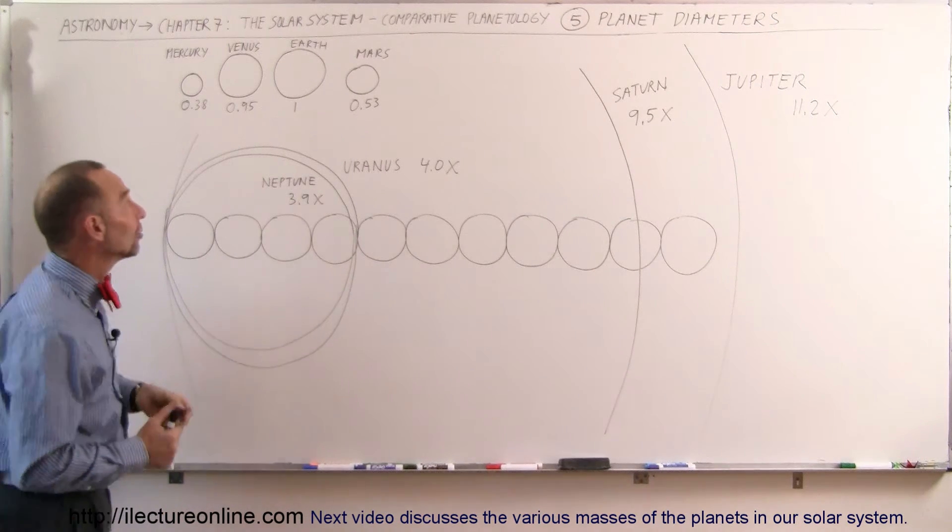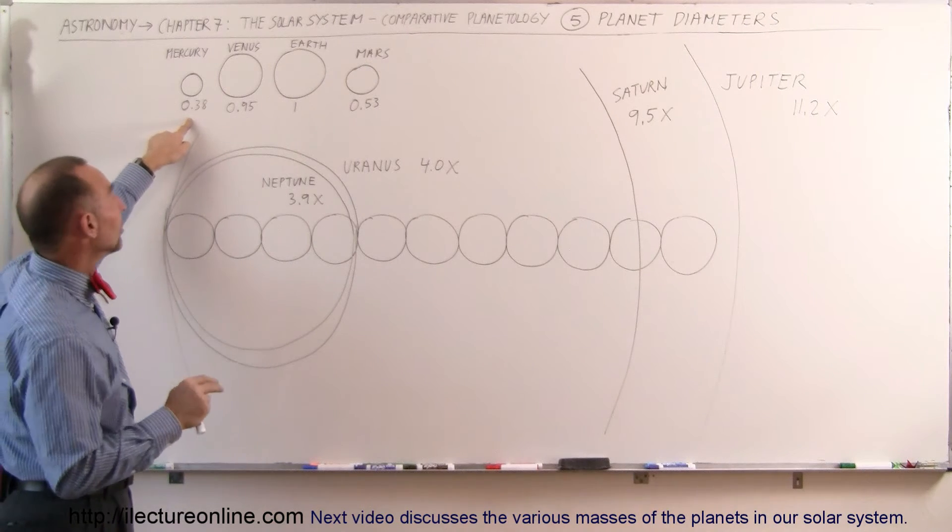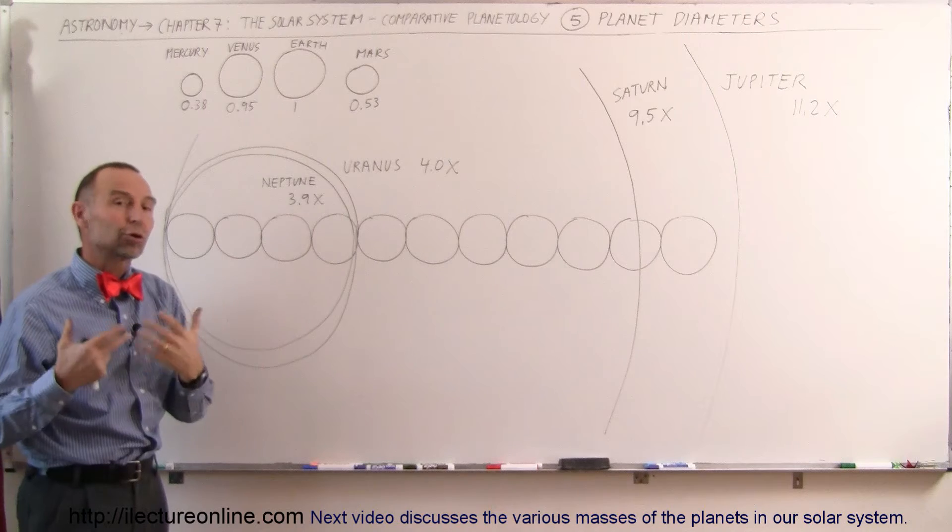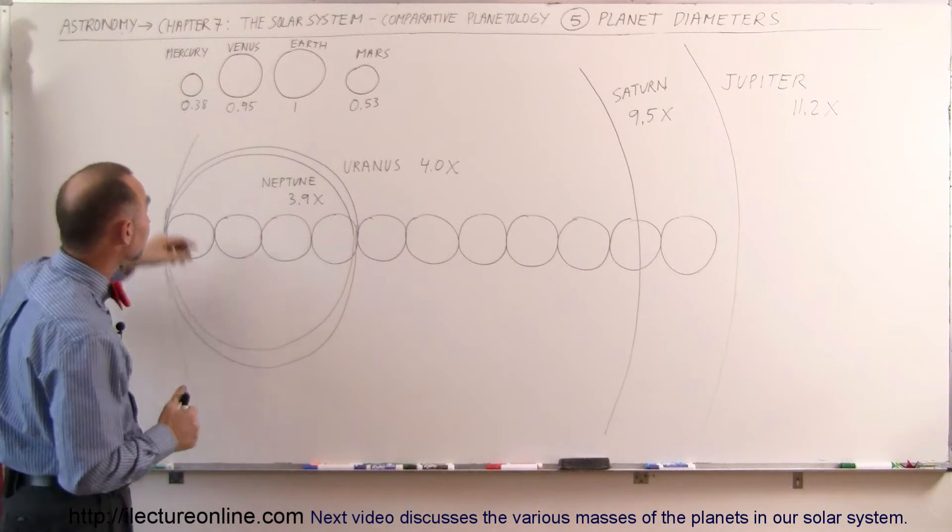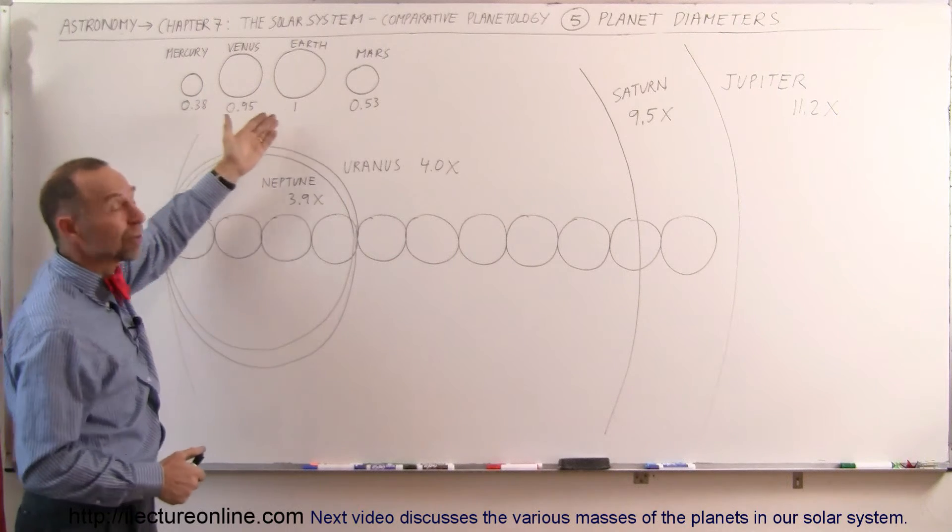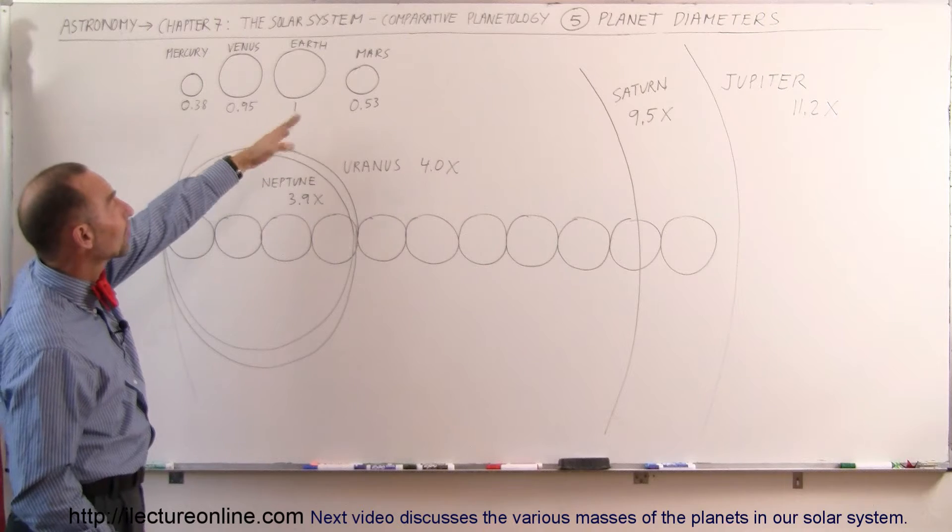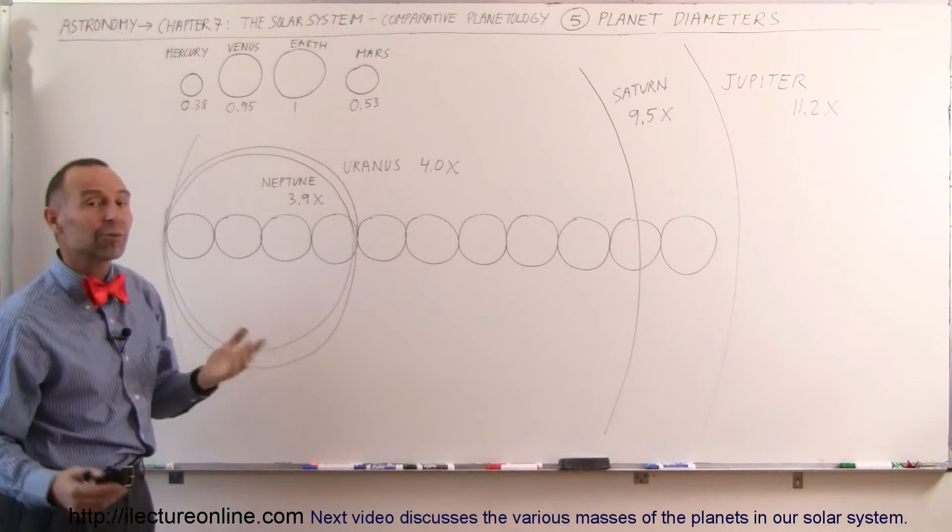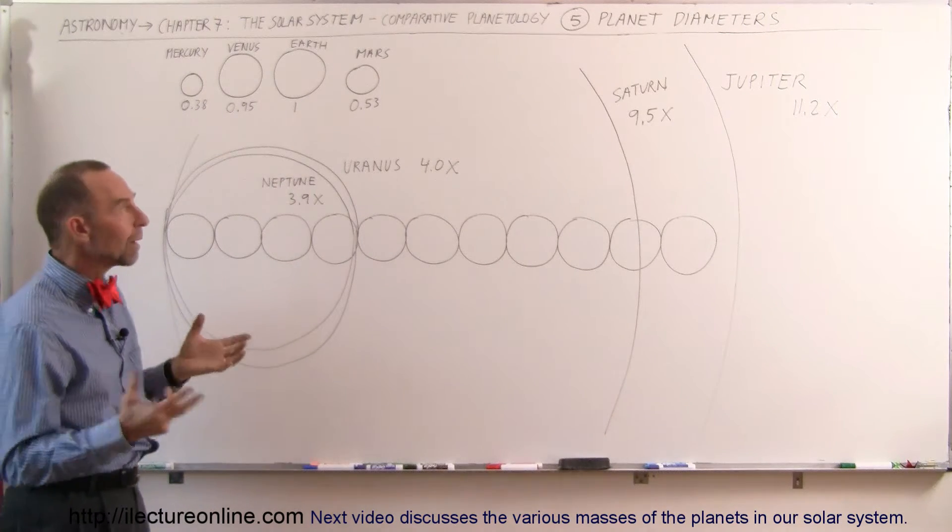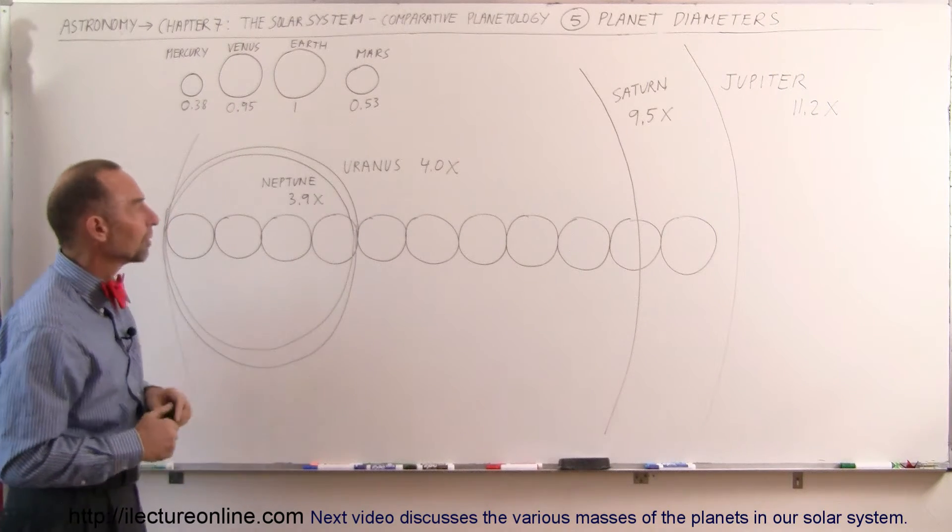Now, volume-wise, you can imagine if Mercury is about a third in diameter, and volume is of course diameter cubed or relative to diameter cubed, then the volume of Mercury is about 1/25th the volume of the Earth, maybe a little bit bigger. Mars, you can see the volume is about 1/8, and Venus, the volume is about 80%. So those are all roughly the same size and same category. Mercury and Mars, of course, a little bit smaller.